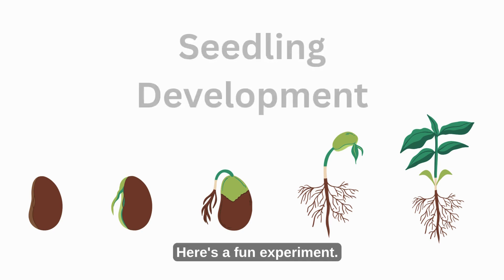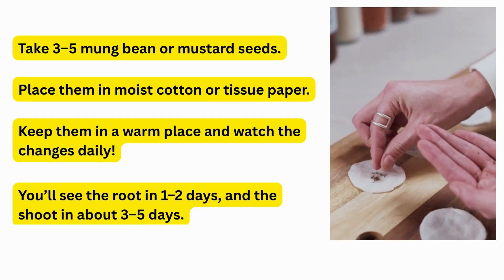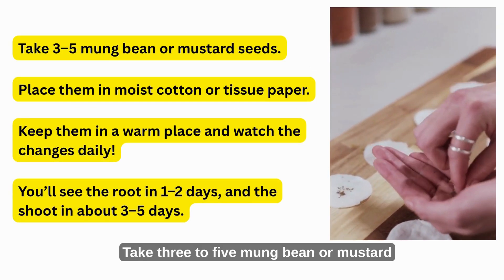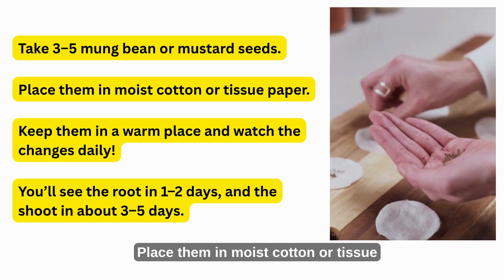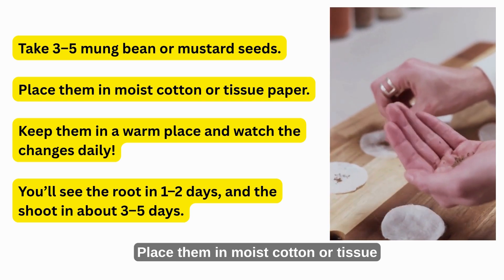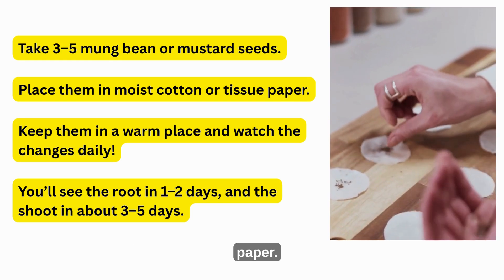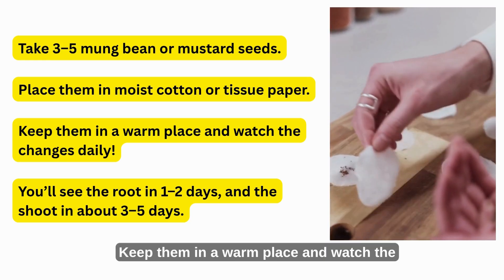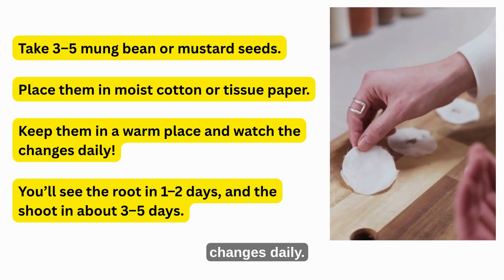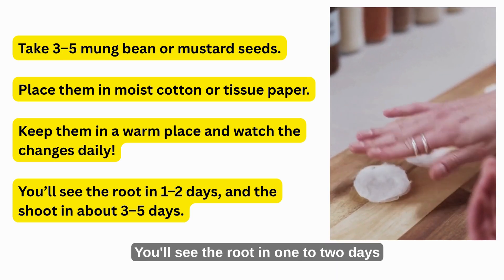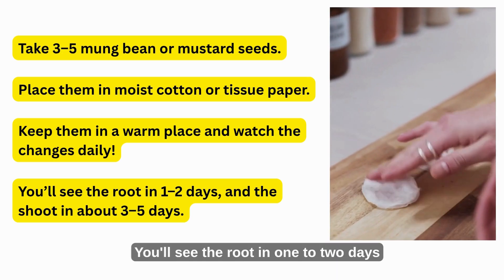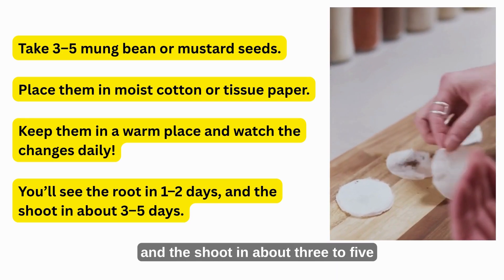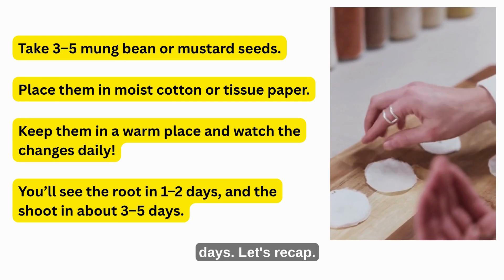Here's a fun experiment. Take three to five mung bean or mustard seeds. Place them in moist cotton or tissue paper. Keep them in a warm place and watch the changes daily. You'll see the root in one to two days, and the shoot in about three to five days.